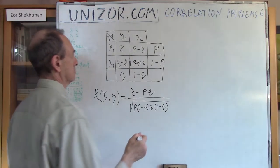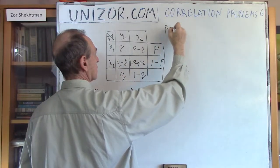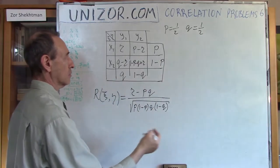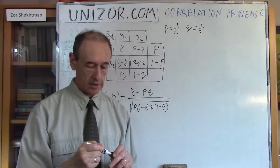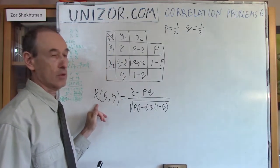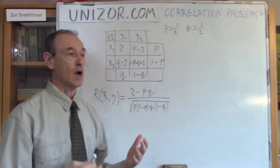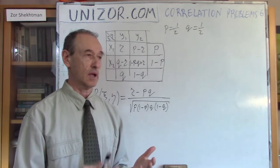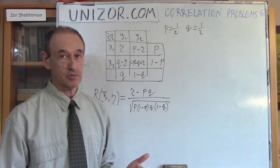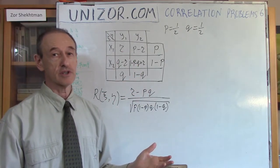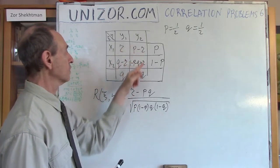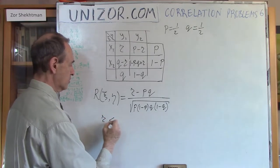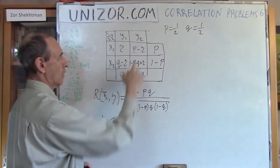Problem number one: p equals one-half and q equals one-half, so 1 minus p and 1 minus q are also one-half. I would like to investigate how the correlation between xi and eta behaves as r changes. Since r is a probability it must be greater than zero, but also all joint probabilities must be non-negative, which means r must be less than or equal to p.